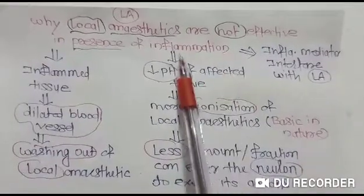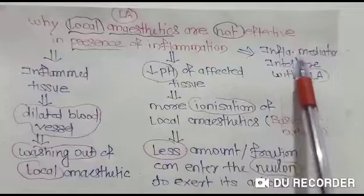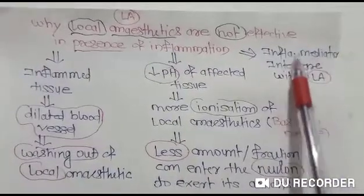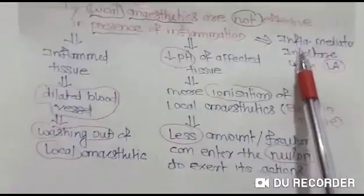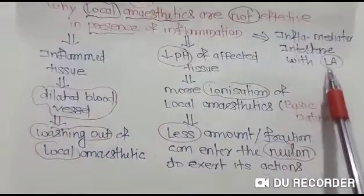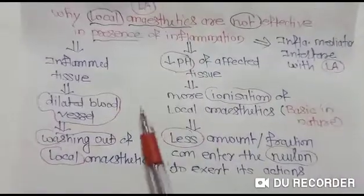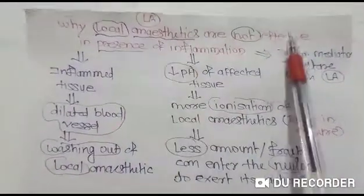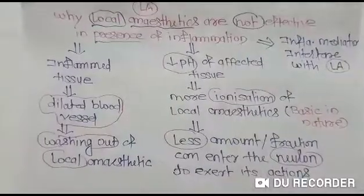The third reason: in the presence of inflammation there is a release of inflammatory mediators such as histamine and prostaglandins, which interfere with the action of local anesthetics. Because of all these reasons, local anesthetics are not effective in the presence of inflammation.